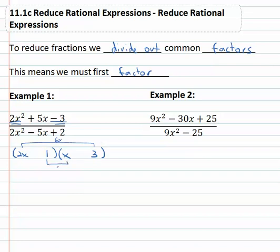1 times x is 1x. That works if the 1x is negative, 6 minus 1 is the positive 5 in the middle. And so there's our numerator factored.